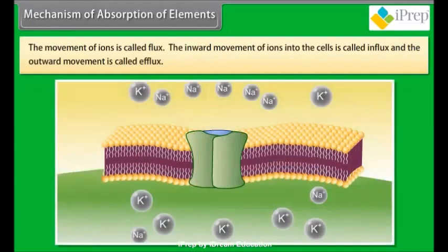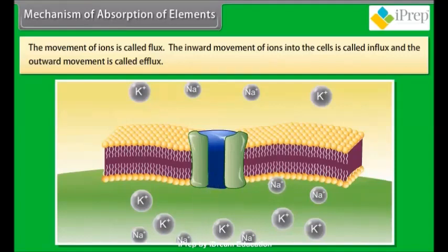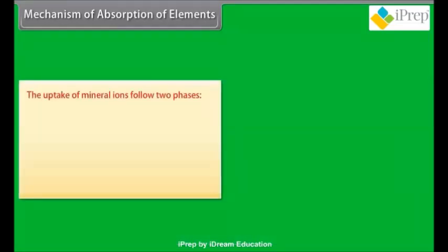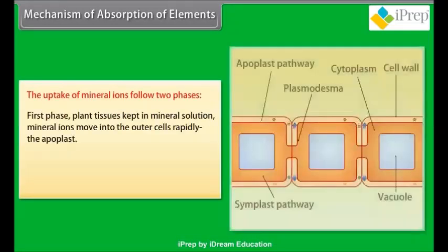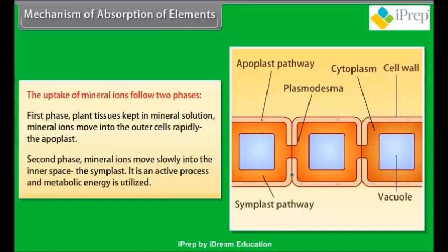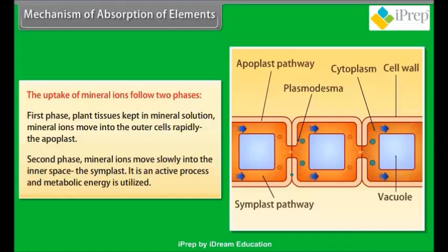Mechanism of absorption of elements: the movement of ions is called flux. The inward movement of ions into the cells is called influx, and the outward movement is called efflux. The uptake of mineral ions follows two phases. In the first phase, plant tissues kept in mineral solution allow mineral ions to move into the outer cells rapidly via the apoplast. In the second phase, mineral ions move slowly into the inner space via the symplast — this is an active process and metabolic energy is utilized.